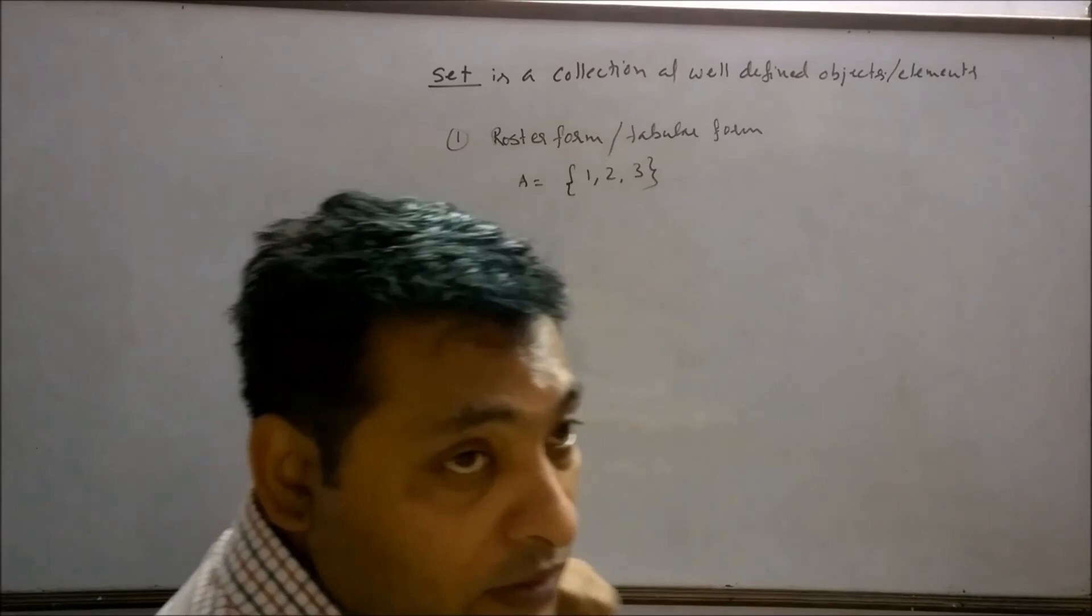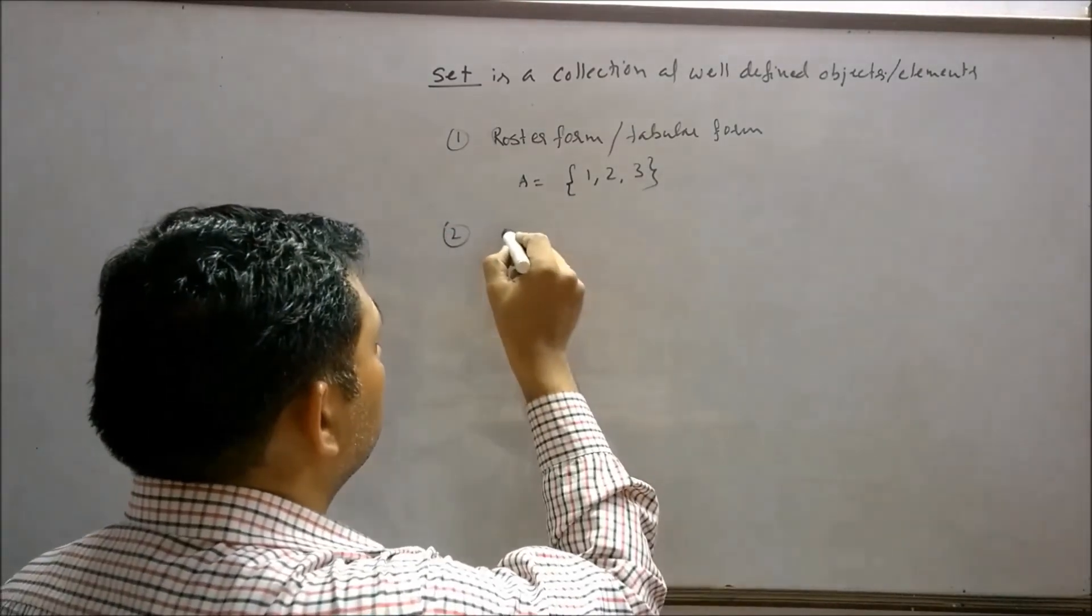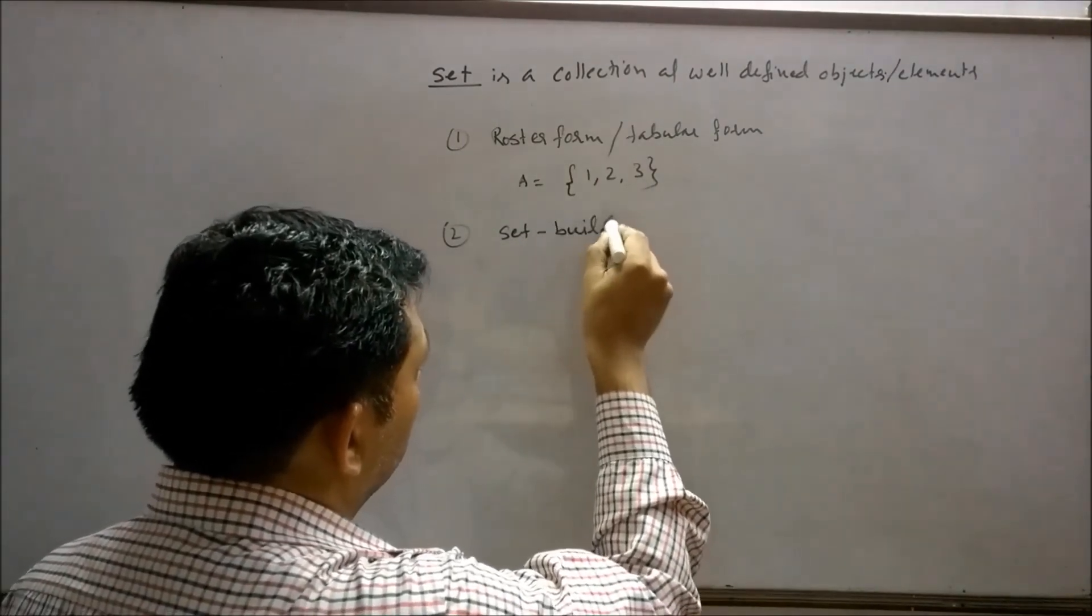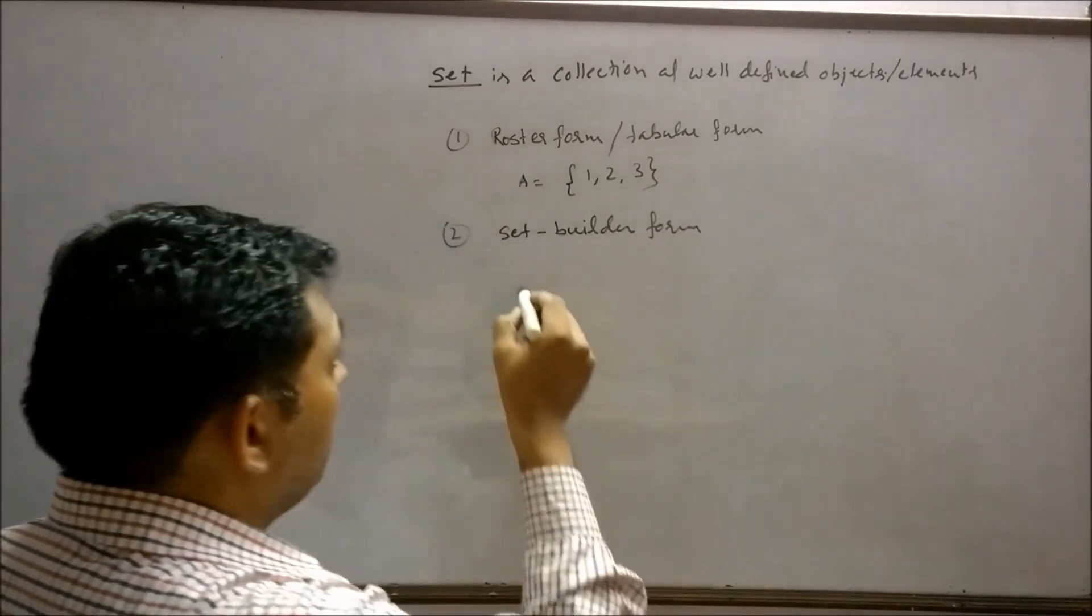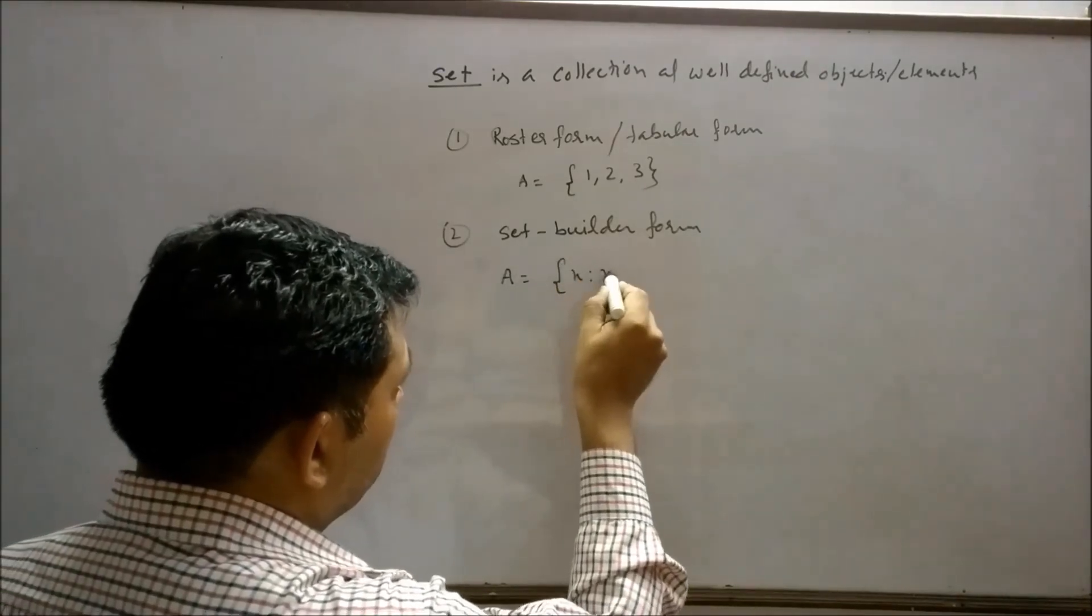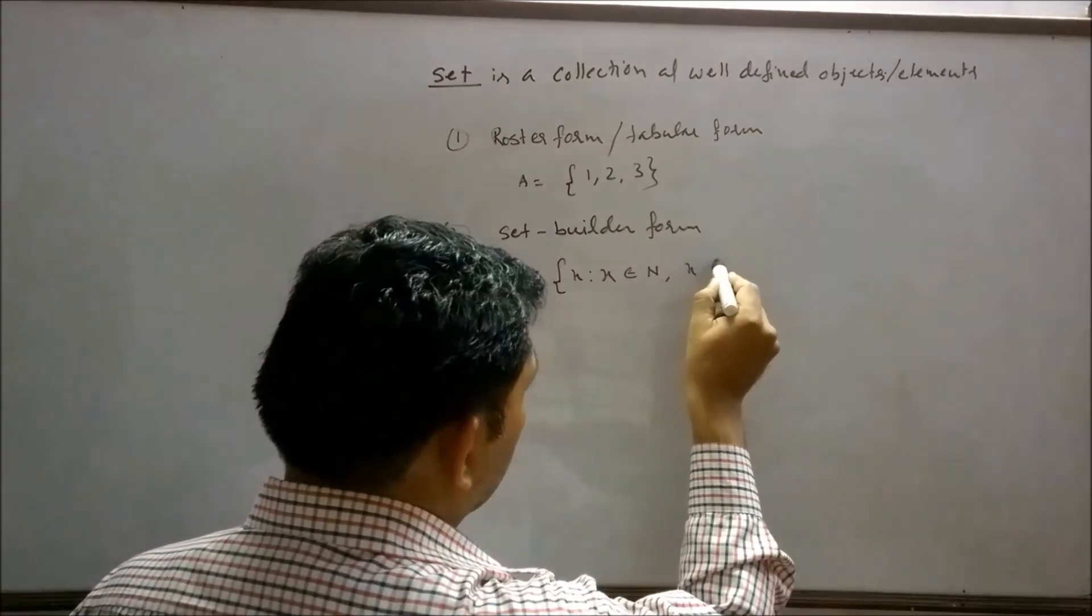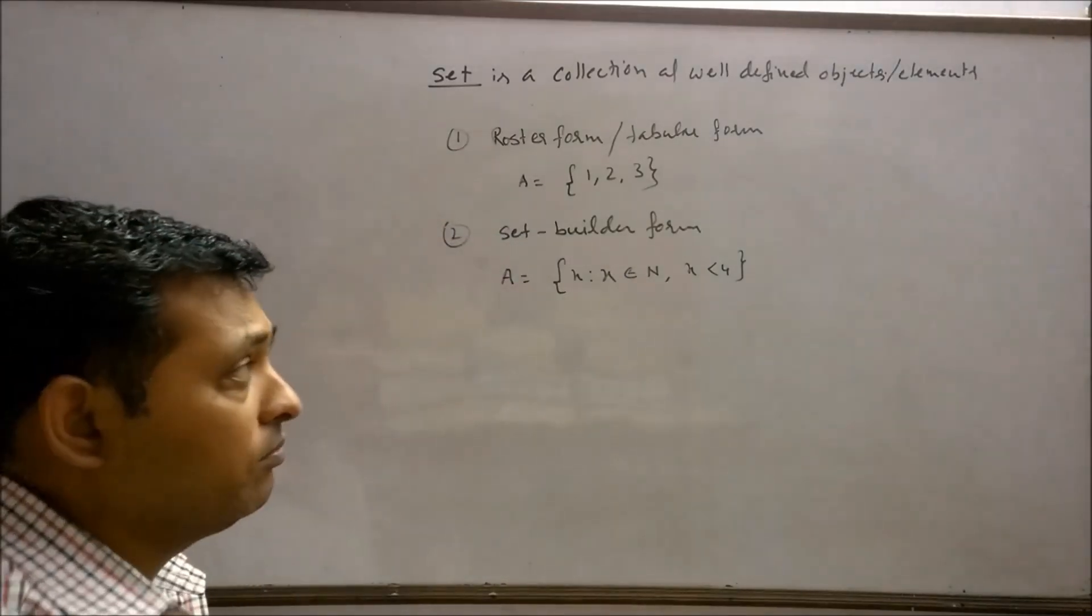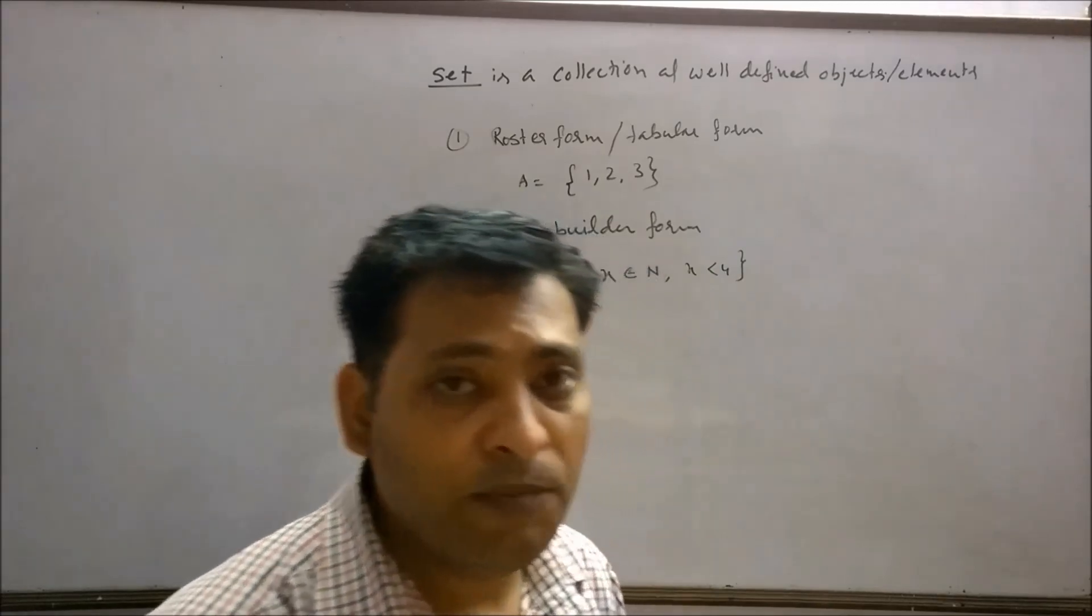This set can also be represented in the form of set builder form. Set builder form means A equals to X such that X belongs to natural numbers and X is less than 4. So less than four natural numbers is definitely 1, 2, 3. So these are two ways by which we can represent sets.